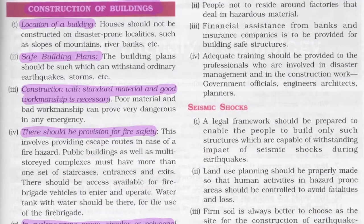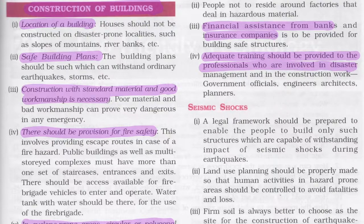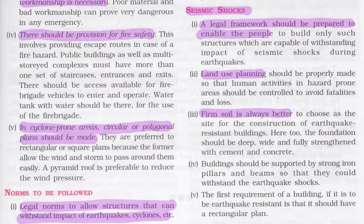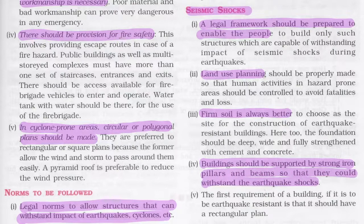Legal norms should allow only structures that can withstand earthquakes, cyclones, and other hazards. People should not reside near factories dealing in hazardous materials. Financial assistance from banks and insurance companies should be provided for building safe structures, and adequate training should be given to professionals involved in disaster management. A legal framework should enable people to build structures capable of withstanding seismic shocks. Land use planning should control human activities in hazard-prone areas. Firm soil should be chosen for construction of earthquake-resistant buildings, which should be supported by strong iron pillars and beams and have a rectangular plan.